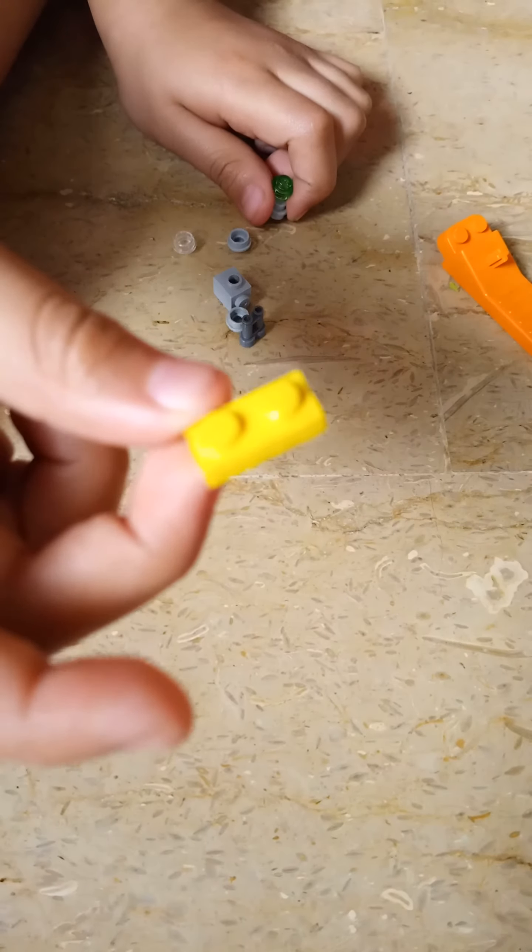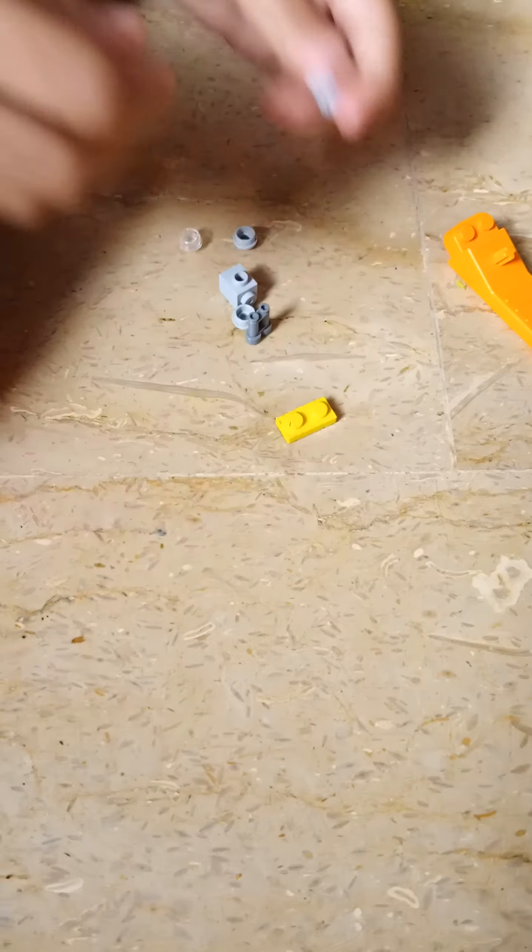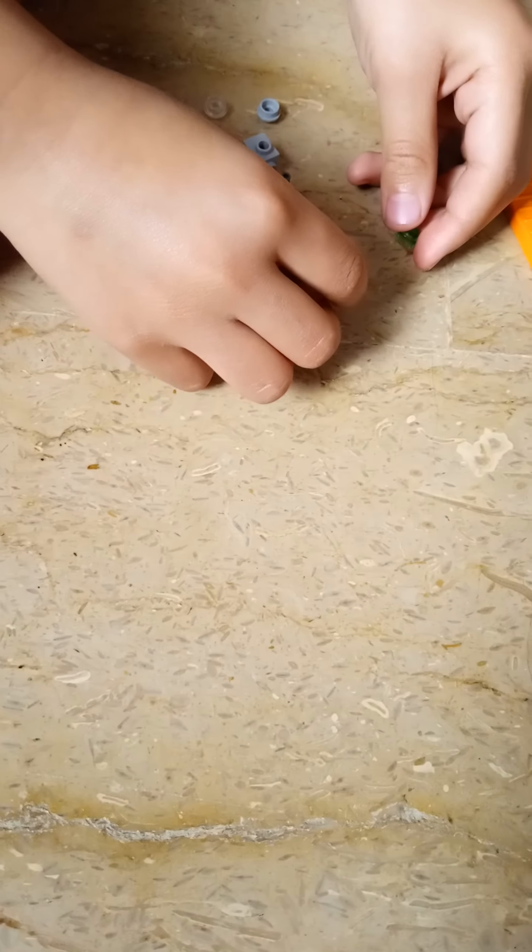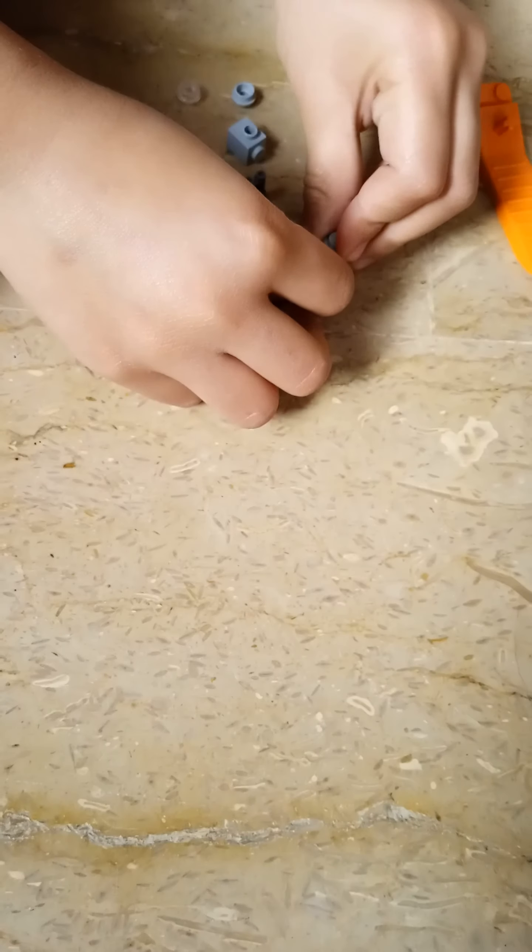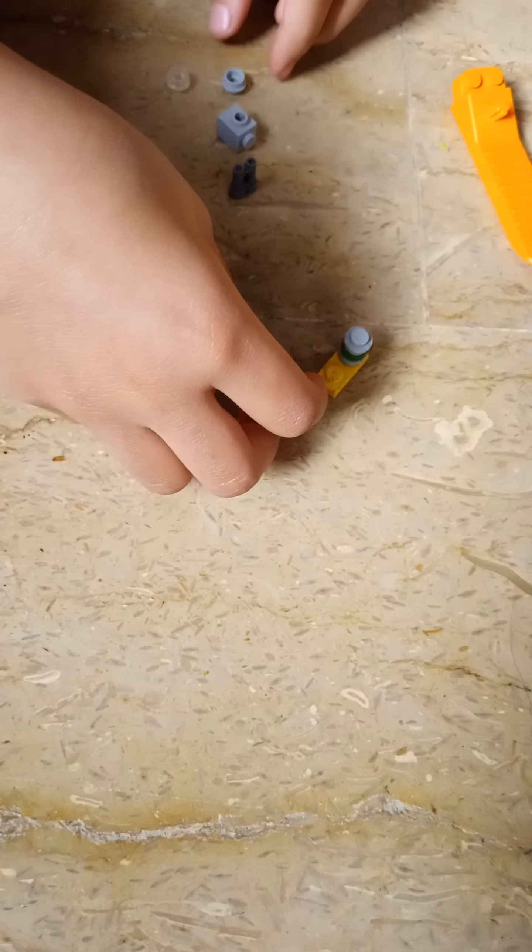First you take this piece, then you get this gray piece and then the same piece like that but it should be green. Then build it up and you need another gray piece like this and put it on.